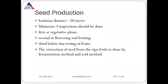Now seed production. As tomato is a self-pollinated crop, the isolation distance for seed production of tomatoes is 50 meters. Isolation distance means the distance between two fields — for example, if Punjab Varkha Bahar 4 variety is sown in one field and Punjab Ratta variety in another, there should be a distance of 50 meters between these two fields so that varieties cannot be mixed.